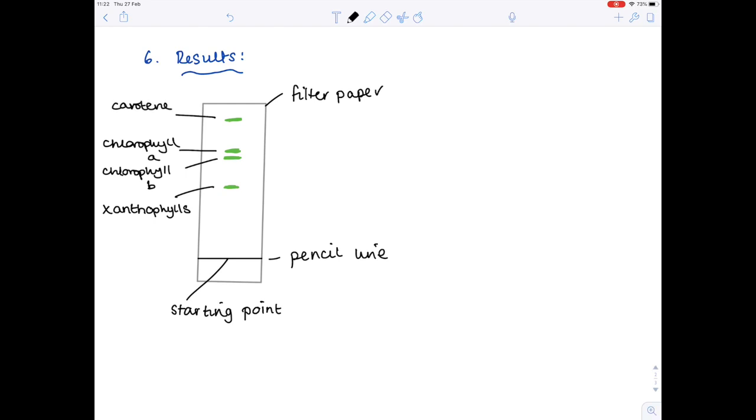You'll also notice that there'll be a final line near the top, and that's the solvent front. So that's how far our running solvent has traveled. Just to make a few points: carotene is the most soluble because it's traveled the furthest, the xanthophylls are the least soluble.